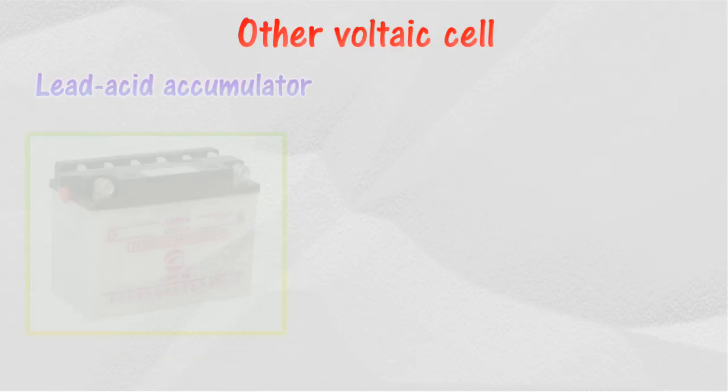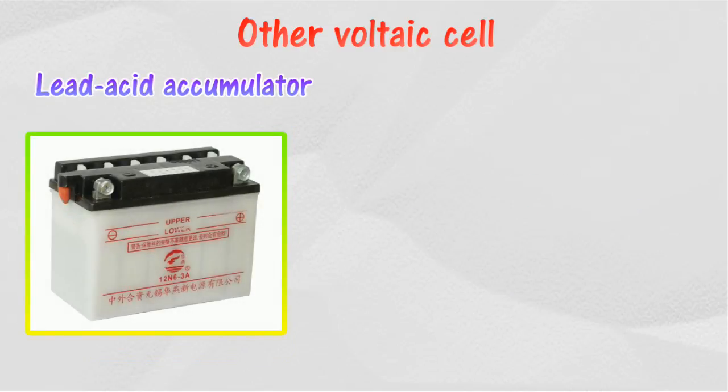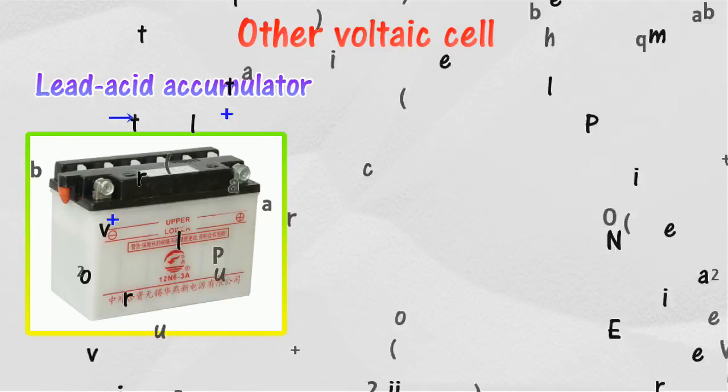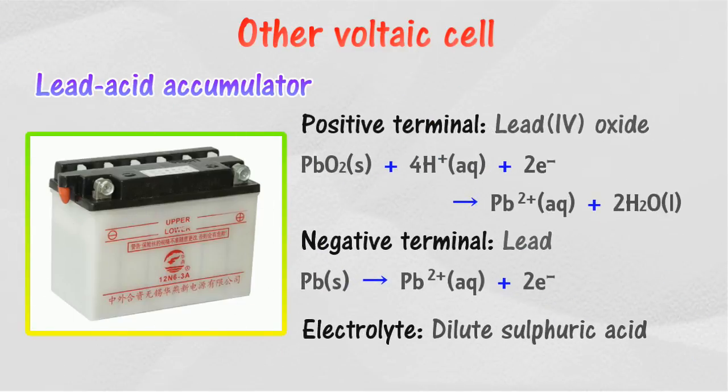For lead acid accumulator, the negative terminal is lead, the positive terminal is lead(IV) oxide, and dilute sulfuric acid is used as electrolyte. Lead acid accumulator is used as vehicle battery and to provide electrical energy to submarines and emergency equipment in hospitals.